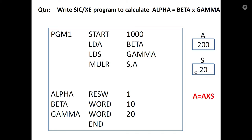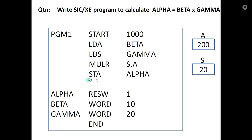Then MULR S, A — register-to-register multiplication. A equals A into S, so the result 200 is in the accumulator. Then STA alpha stores the result. This is the equivalent SIC XE program for alpha equals beta into gamma.